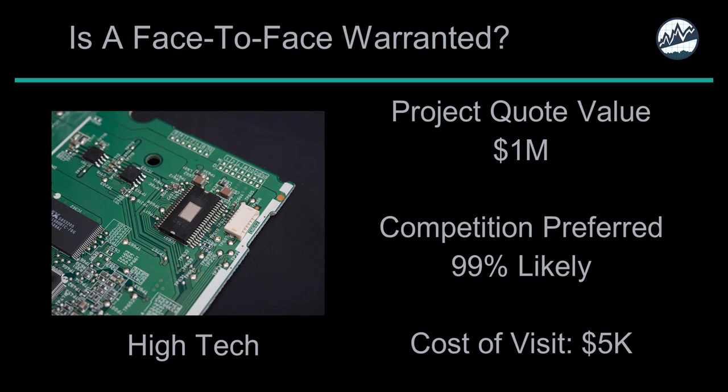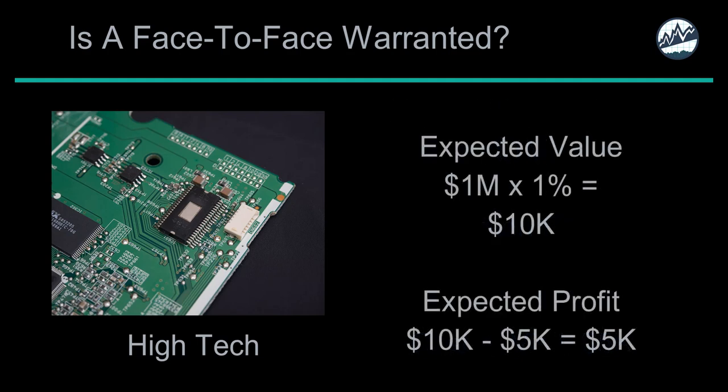Suppose you work for a company that manufactures high-tech equipment. Your company has received a quote for a project estimated at $1 million in gross profit. The downside is that your competition is preferred and 99% likely to get the award. A face-to-face meeting will cost your organization $5,000 for travel costs, time to develop a professional quotation, and time and materials for the sales meeting. Should you take the meeting or no-quote the project?